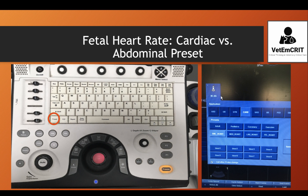In general, there are two ways to get the fetal heart rate: in cardiac mode versus abdominal mode or preset, and I will teach you both. In order to choose a preset, you need to find the preset button on your machine. As you click on preset, you will have different options. I'm going to start with the cardiac preset and then move on to the abdominal preset.